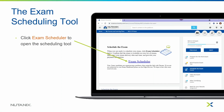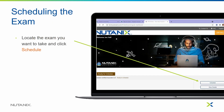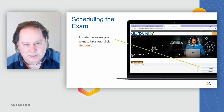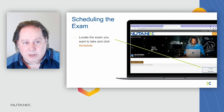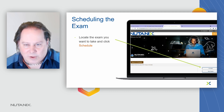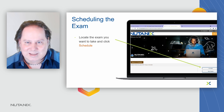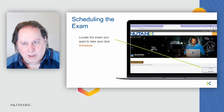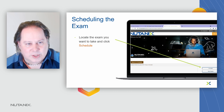Once you've taken the practice exam, the next step is to schedule your exam. Click the exam schedule link, which takes you to our scheduling tool. You'll see each available exam listed — the first being the Nutanix Certified Associate Exam. Locate the exam you want, click the Schedule button, and follow the steps to select a date and time. If you're using a voucher or payment method, select that as well, and we'll email you a confirmation.